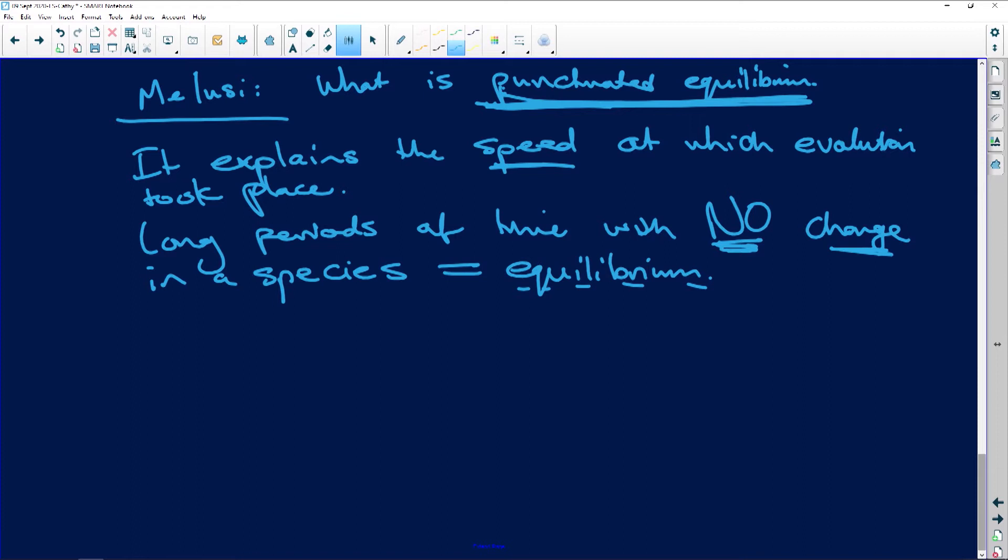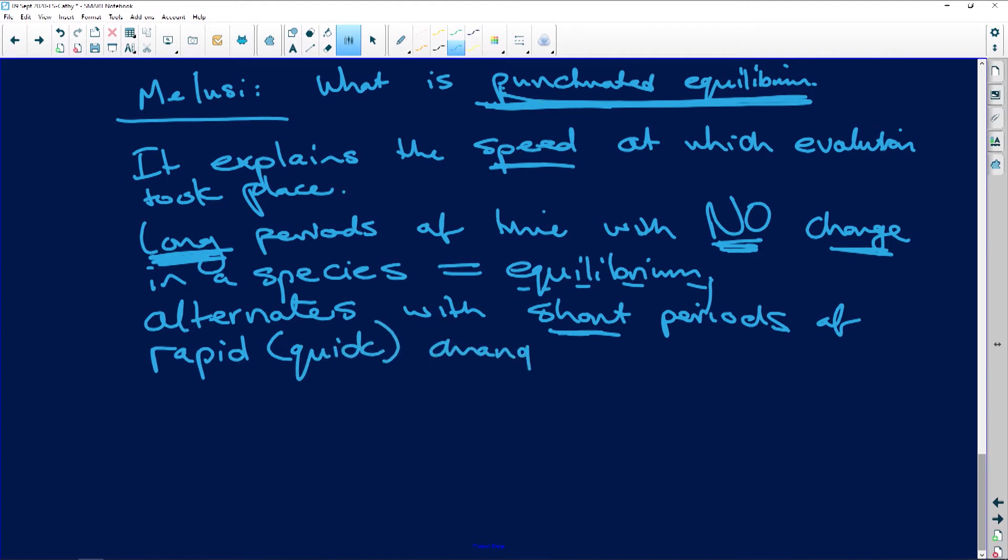And that alternates, in other words you have this and then it follows with - alternates with short periods - oh hang on, this is long, long periods of no change, that's your equilibrium - alternates with short periods of rapid, you could also say quick, so rapid or quick changes by natural selection.